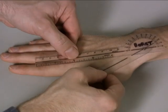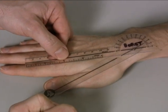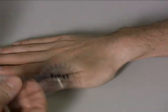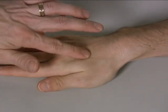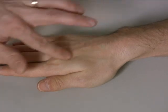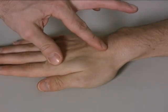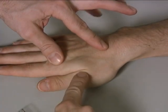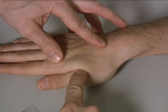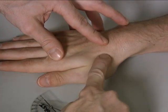The goniometer is placed on its side on the back of the hand and thumb. The stationary arm of the goniometer is placed over the index finger metacarpal, so you'll have to palpate that, and the moving arm is placed over the thumb metacarpal.